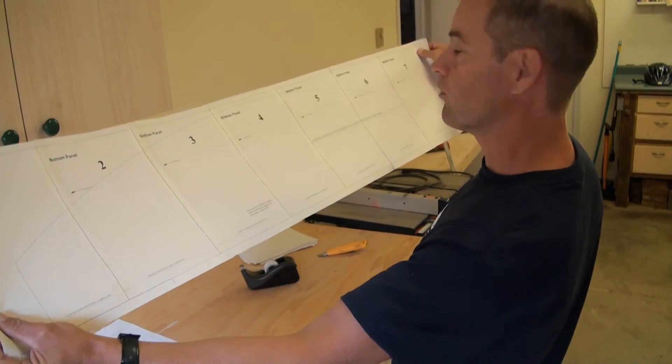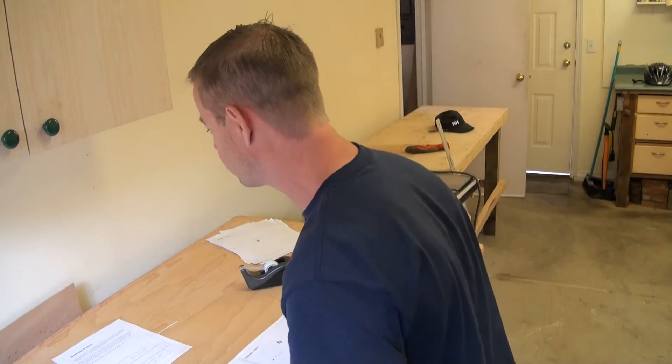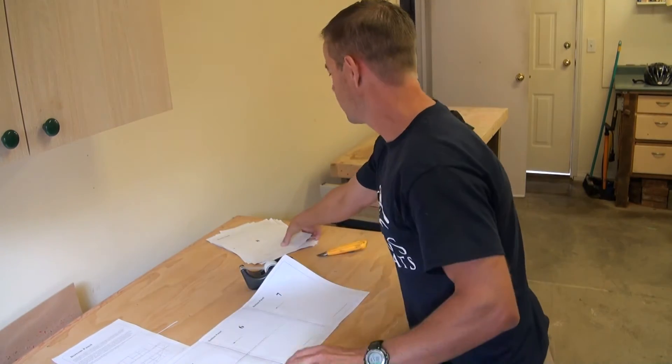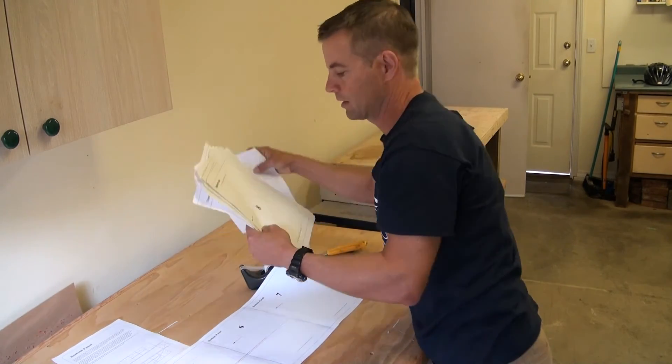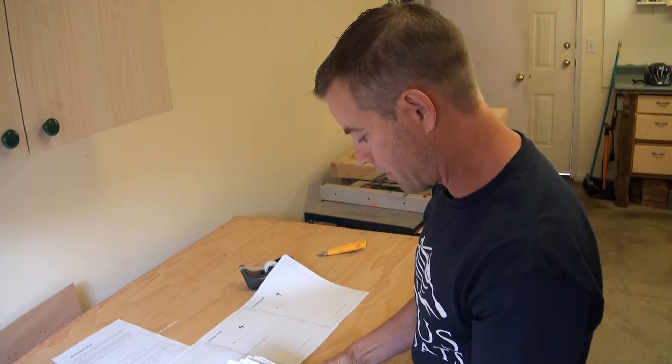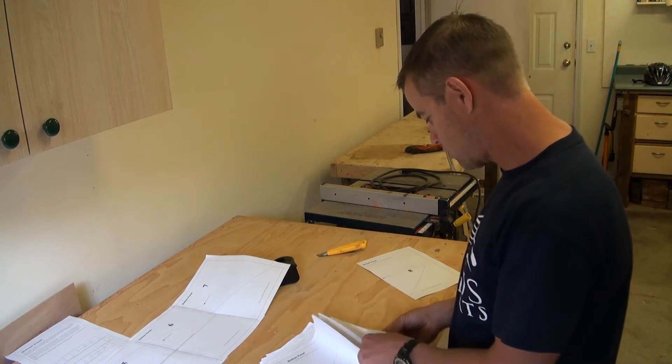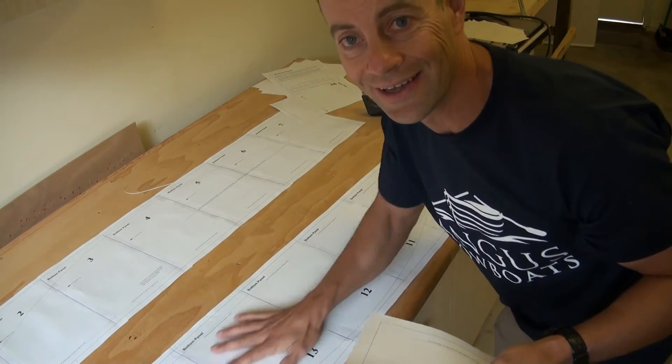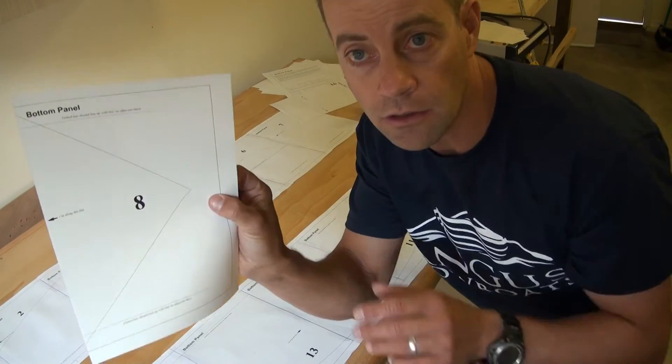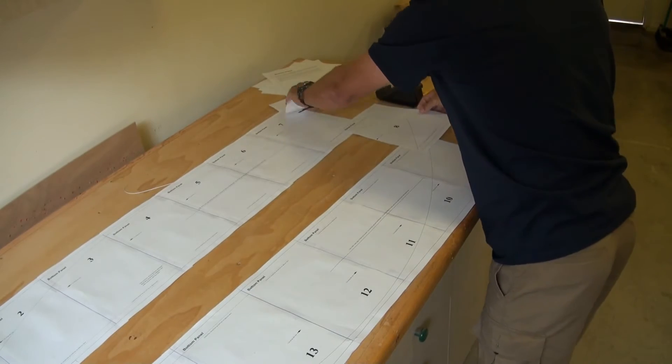So we've created one row here, pages one to seven which is going to comprise one side of the bottom panel and then next in our pile of plan pages here we've got page eight which I'll put aside for now, that's the bow, and then next we will do pages number nine to fifteen.